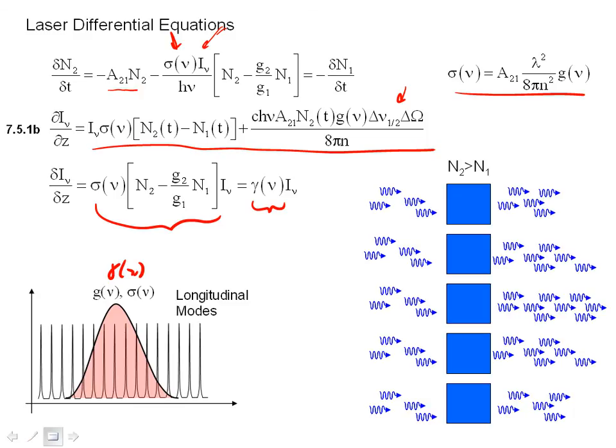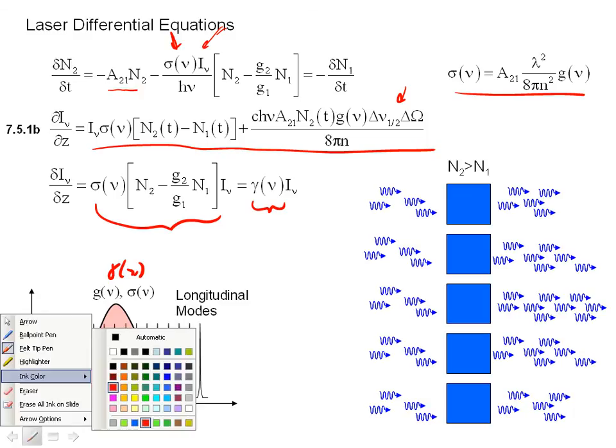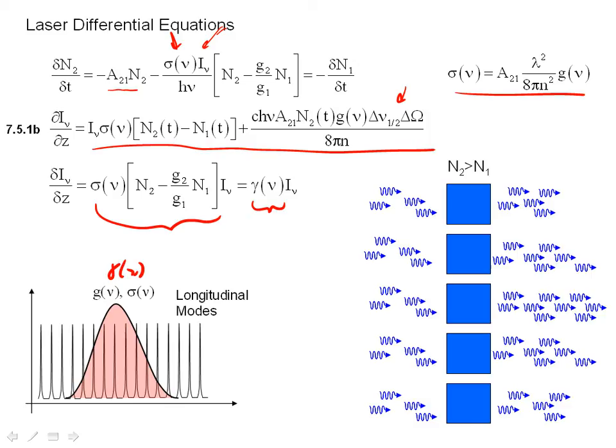First of all, let's take a look at several different frequencies. Frequency number one is over here on that part of the gain curve, and that corresponds to that picture right there. Here, the line shape has a small value. The cross-section is small, and therefore the gain is small.